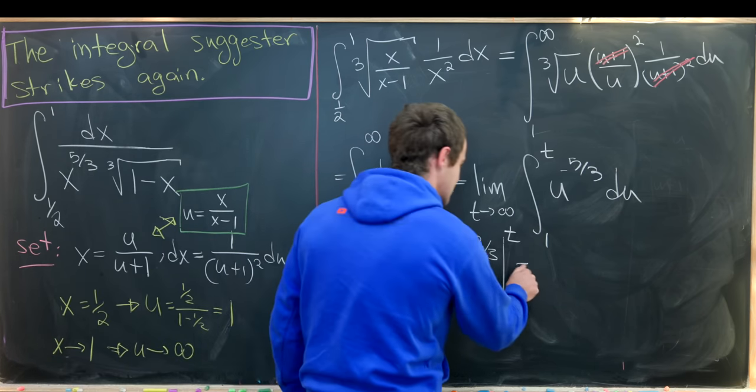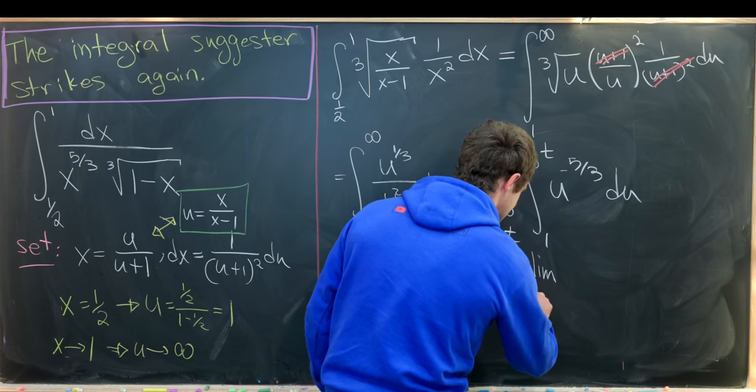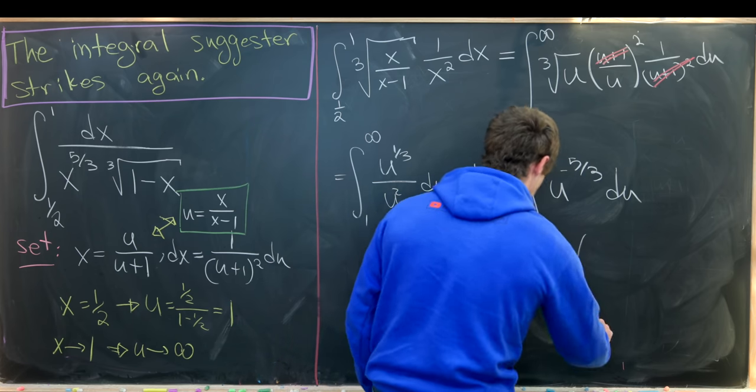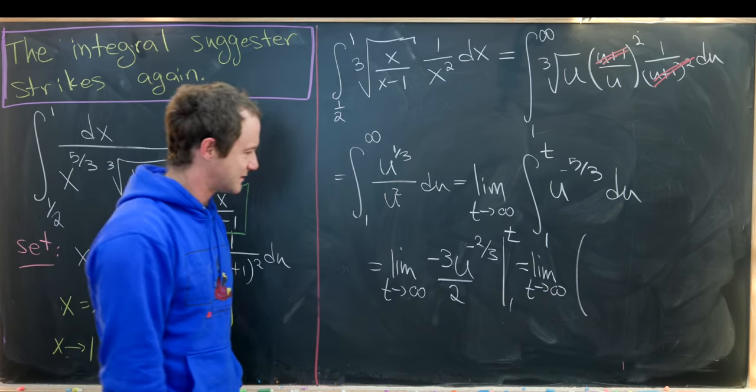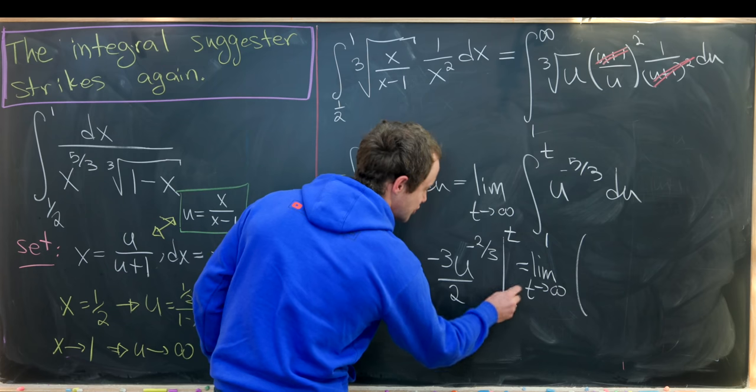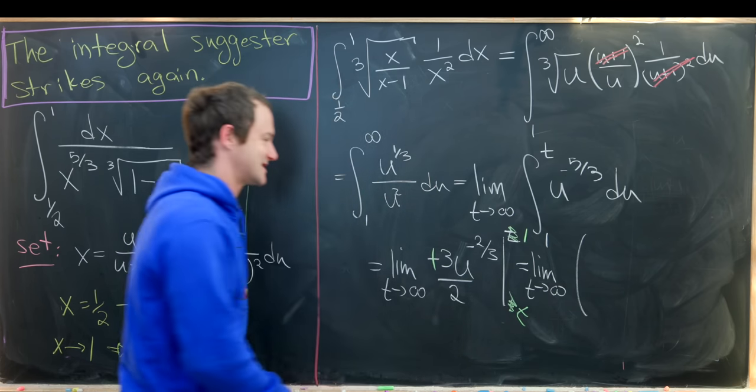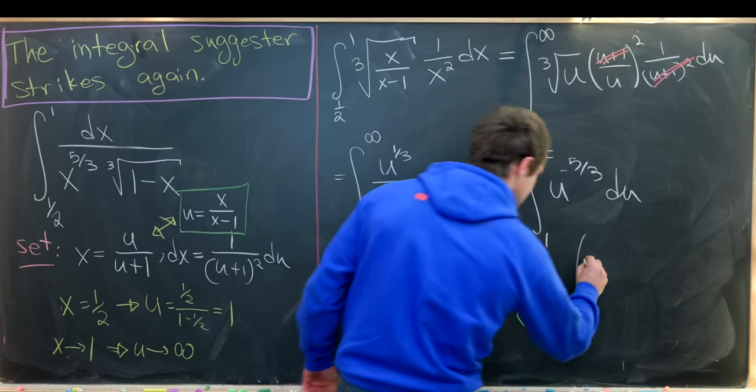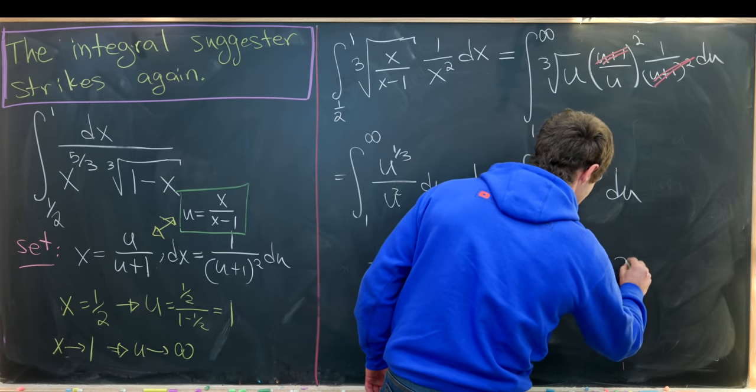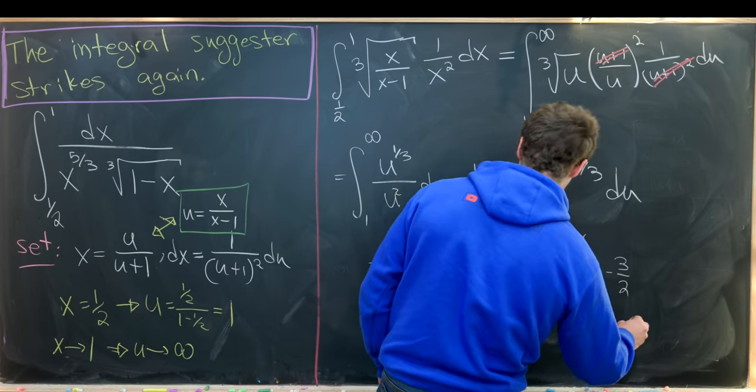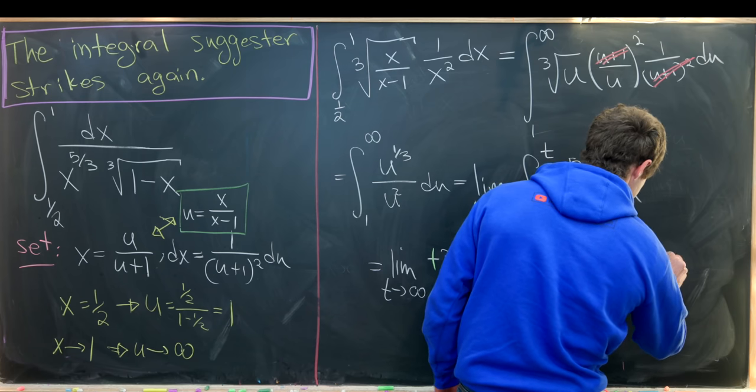So in the end, that'll give me the limit as t goes to infinity of, well, I'd like to do a simplifying trick and exchange the bounds of evaluation by changing this sign. So that's going to leave me with 3 halves minus 3 halves times t to the minus 2 thirds.